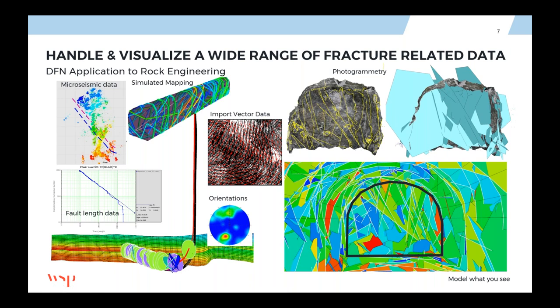Fractured rock masses require us to handle and visualize a wide range of fracture and related data. Starting in the lower left corner, a borehole with fracture intersections tells us about fracture intensity and orientation. Moving to the images above, we consider the importance of fracture size, using mapping data from an outcrop or the inside of a tunnel. Microseismic events from fluid flow injection can also help gauge and constrain the fracture network. Images on the right show how we can use photogrammetric data from drones and lidar surveys to constrain the DFN model. These data sources allow us to representatively model what we see.